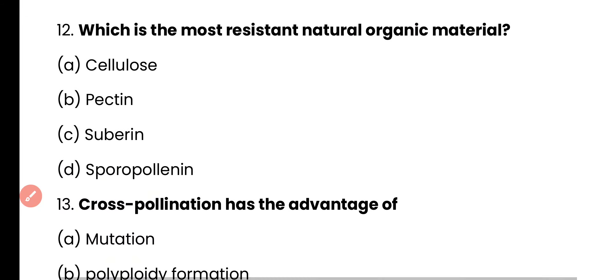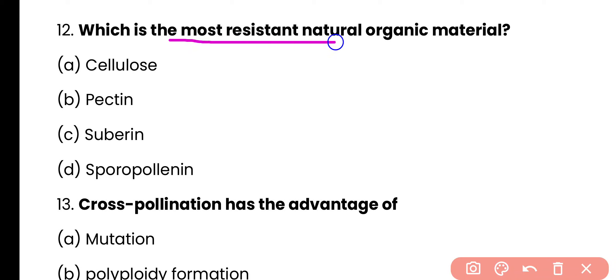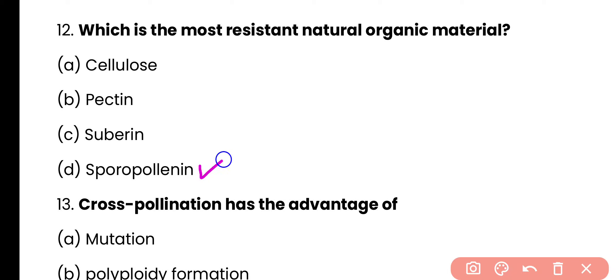Question number 12. Which is the most resistant natural organic material? Cellulose, pectin, sporopollenin, or suberin? The correct answer is option D. Sporopollenin is the most resistant natural organic material and it is present in the exine of the pollen grain.